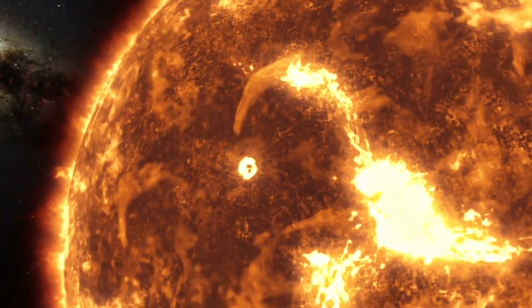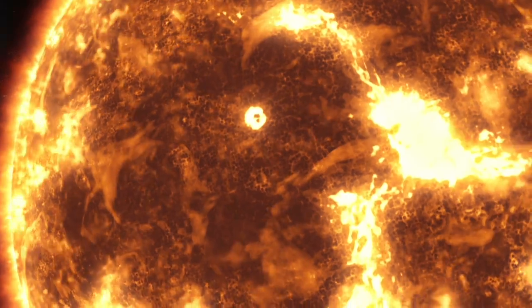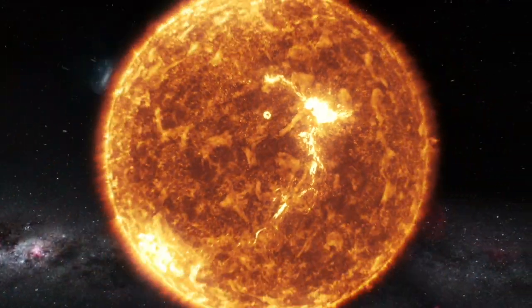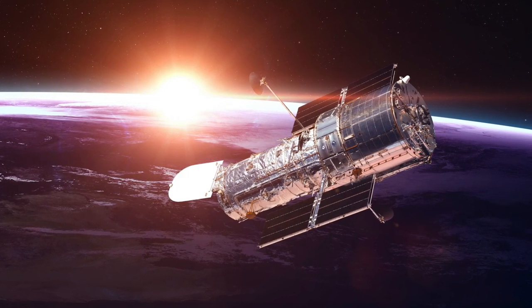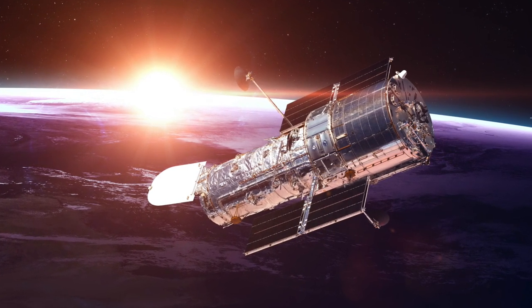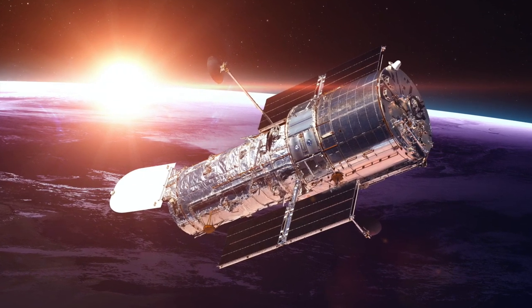Long before our sun and the Earth even existed, a planet the size of Jupiter formed around a star that had similarities to our sun. Today, 13 billion years later, NASA's Hubble Space Telescope has accurately measured the mass of this most distant and oldest known planet.